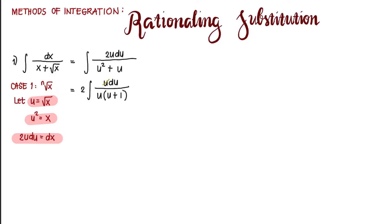We can cancel out u. That leaves 2 integral of du over u plus 1. Take note that from an irrational form, we are able to convert the given integrand to a rational form. Is this already integrable? The answer is yes. So integrating, that's 2 ln of u plus 1 plus c.